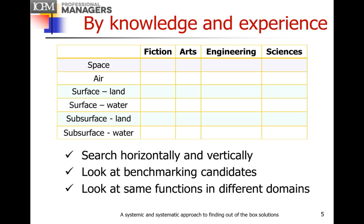Similarly, you can build a framework by knowledge and experience. You can start from all the way up in space, coming down to air, surface, and subsurface. We can split the surface up into land and water, with subsets of that — different types of land: urban, rural — and split them up again. Water can be deep ocean, littoral, coastal, whatever, depending on how far you want to go. And you can again search horizontally and vertically.